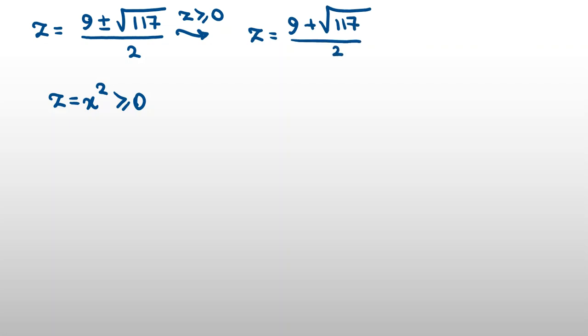z could be 9 plus root 117 over 2. Also, if you want, you can write 117 is multiple of 9. It's 9 times 13. So, you can also write it as 9 plus 3 root 13. That's root 9 is 3 over 2.